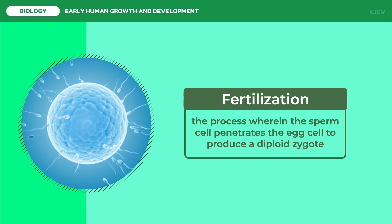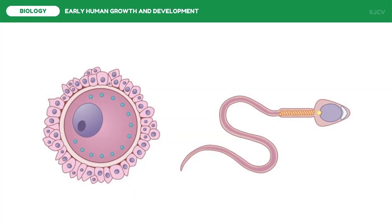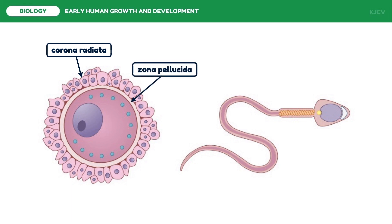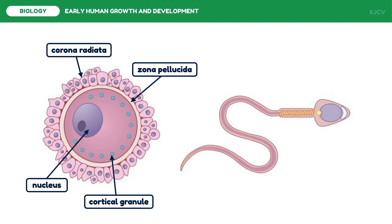To look deeper at fertilization, let us first identify the parts of the gametes vital for this process. The egg cell has a corona radiata, which is the outermost layer used for nourishment and protection. The zona pellucida protects the egg cell and plays a role in the interaction between egg and sperm. Cortical granules are regulatory secretory organelles found within oocytes, most associated with polyspermy prevention after fertilization. The nucleus contains the genetic material from the mother.